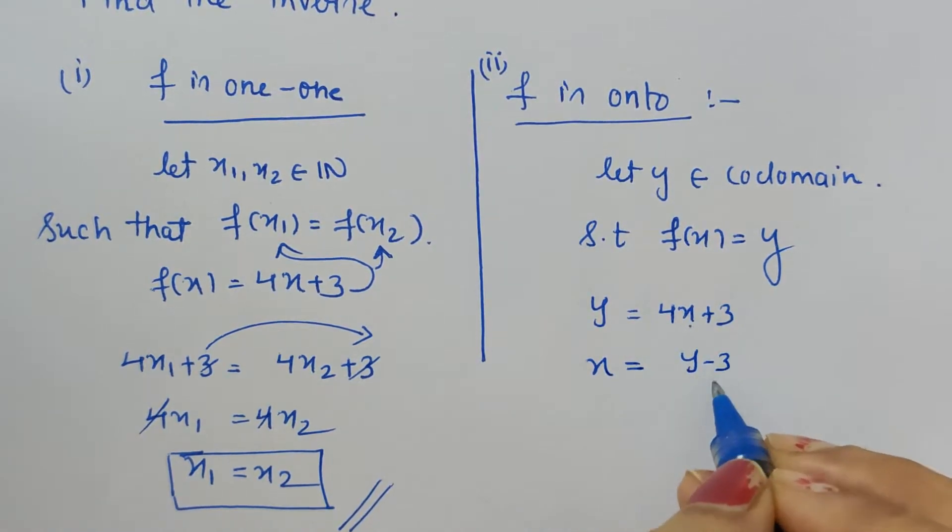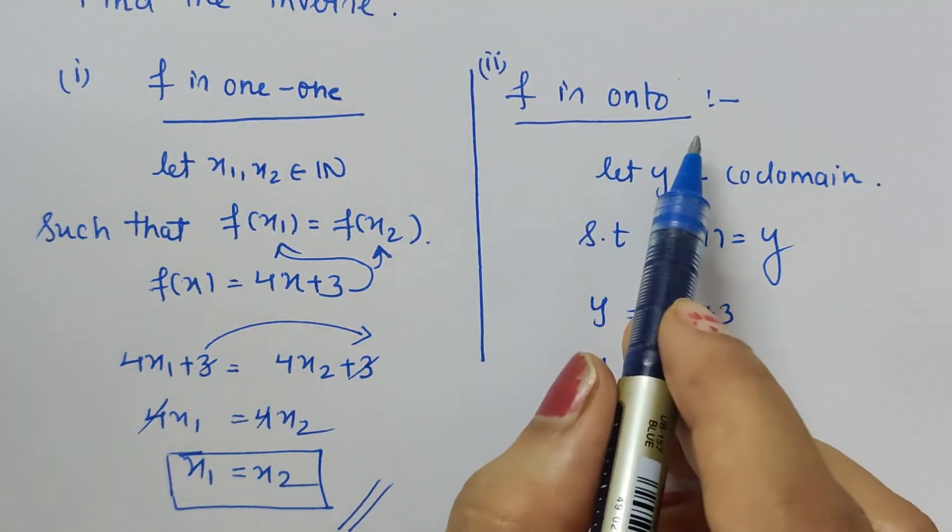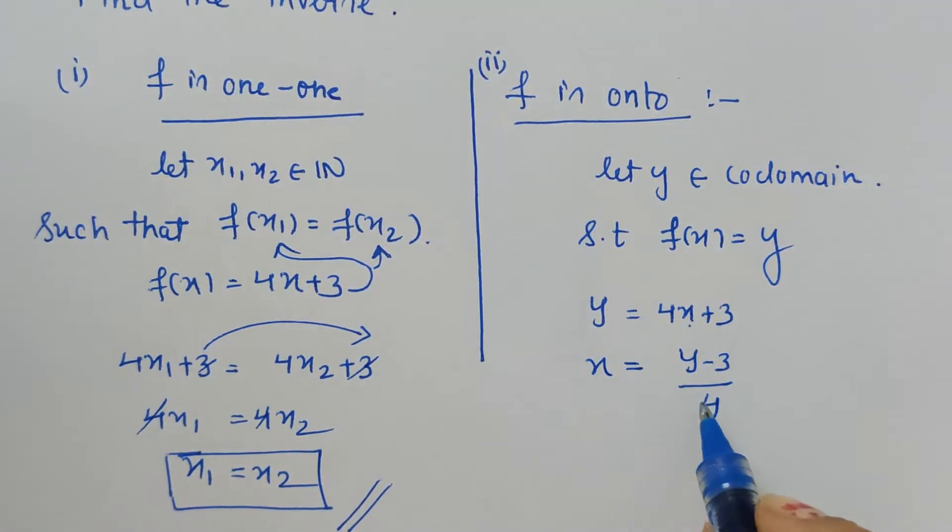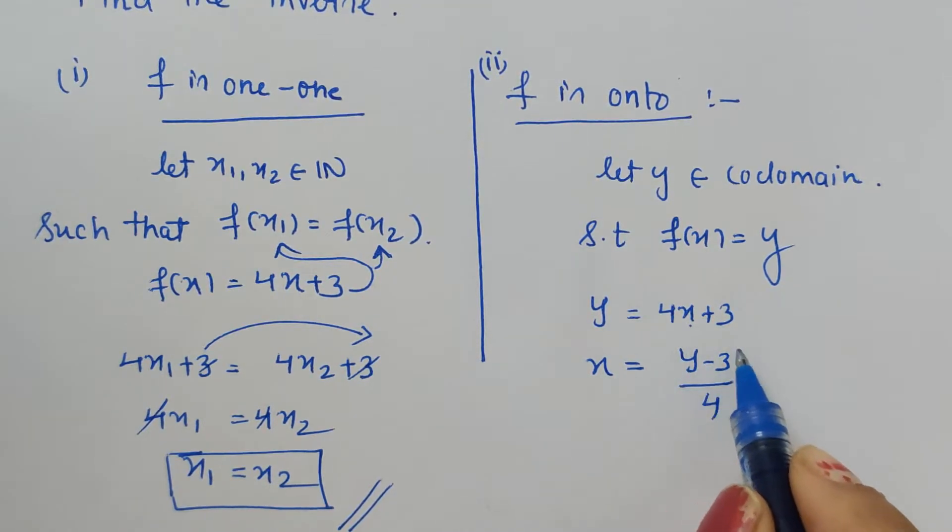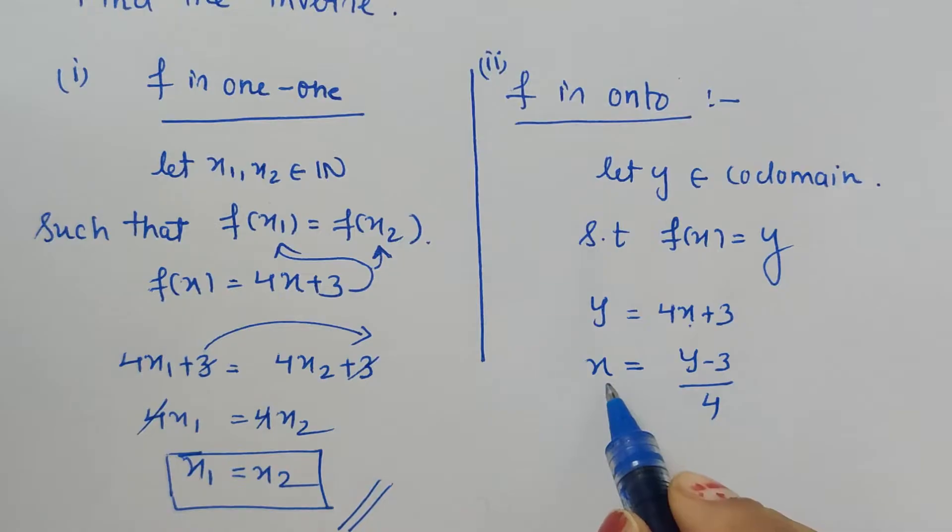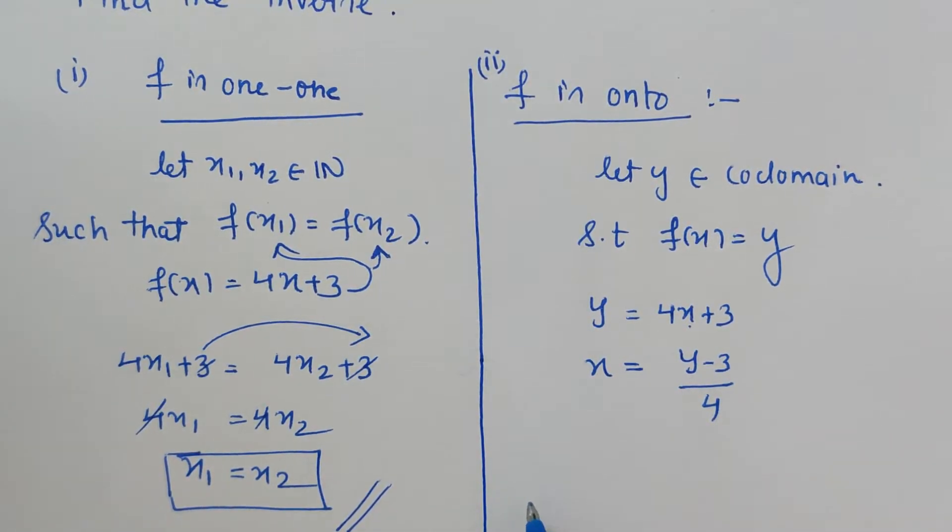At this step, under onto function proof, we have to check that for every y, x exists or not. So here, for every y means we have to consider all those elements which belong to the codomain, and for that, whatsoever result we get should belong to domain. So here in the question, what definition is given to us for codomain?